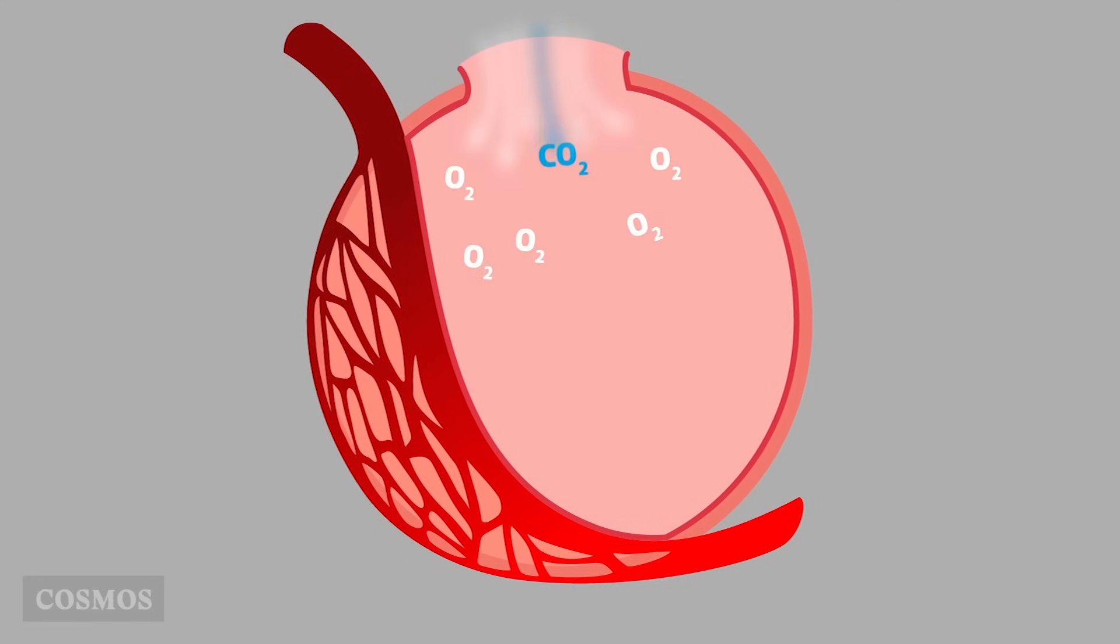Because breathing keeps bringing fresh air into the lungs and the circulatory system keeps bringing blood that is low in oxygen and high in carbon dioxide, diffusion always acts to bring oxygen into the body and take carbon dioxide out.